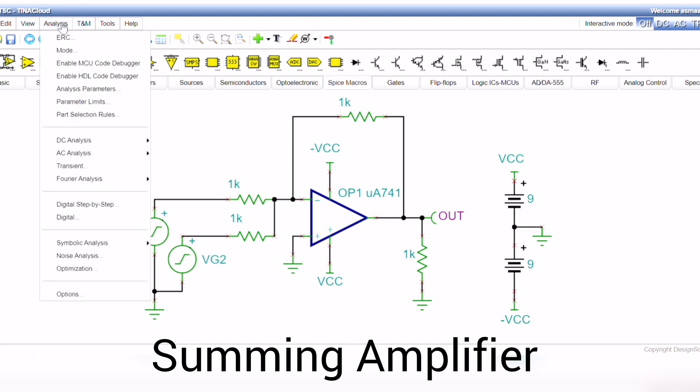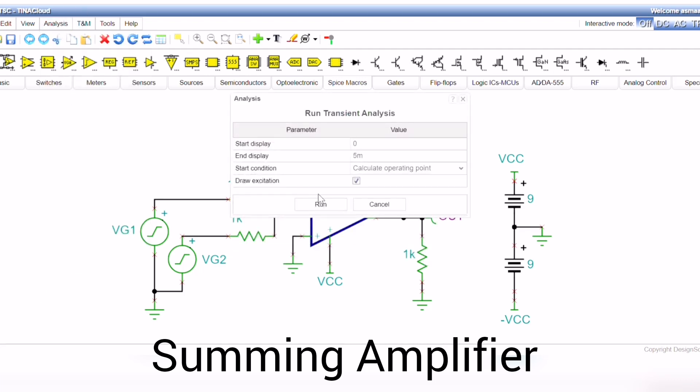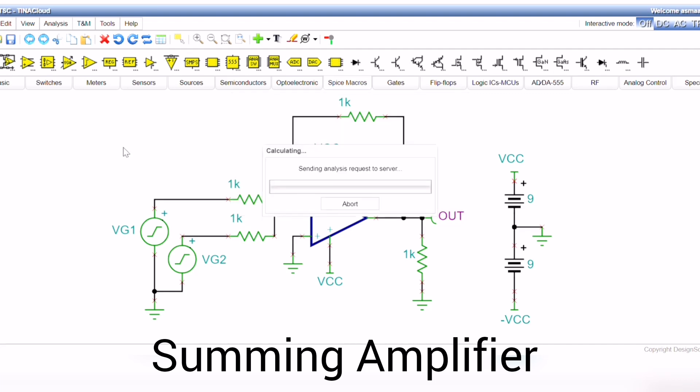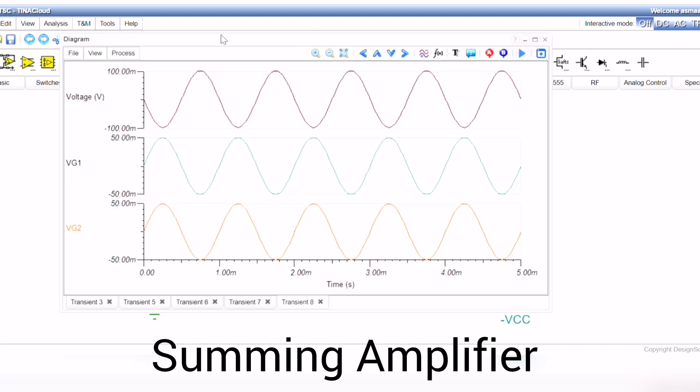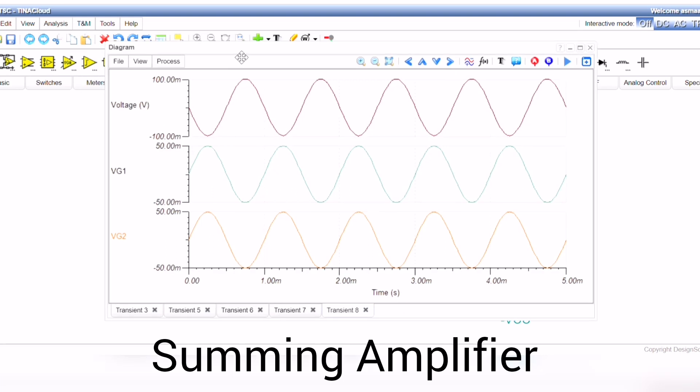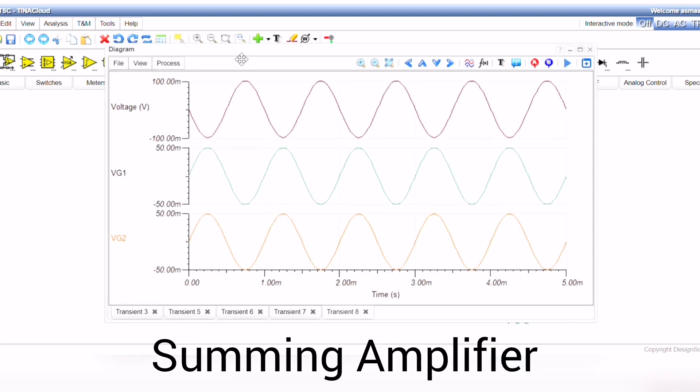Simulating the output is simple. Click on Analyzes, then on Transient. Run the simulation, and you should see the applied voltages and the output voltage, as shown here. As you can see, the output voltage amplitude is 100mV, which is the sum of VJ1 and VJ2. And this is how a summing amplifier circuit works.